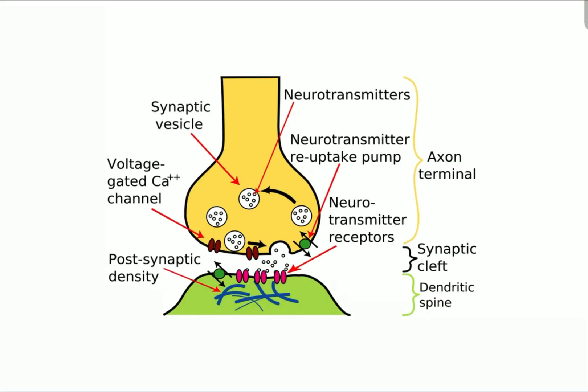The junction between two neurons is known as a synapse. We can see a presynaptic membrane and a postsynaptic membrane based on this diagram. Between these, we see the synaptic cleft.